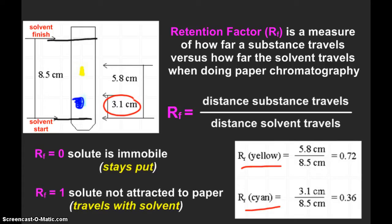If we had an RF equal to 0, that means the solute is immobile — it would stay put and not travel up the paper. For example, if we used a permanent marker, it wouldn't travel or separate. So we'll be using dyes and inks that are water-soluble so they will indeed travel. If the retention factor equals 1, that means the solute is not attracted to the paper at all and would completely travel with the solvent. We shouldn't see either of those extremes in the lab, but that's just a little background.